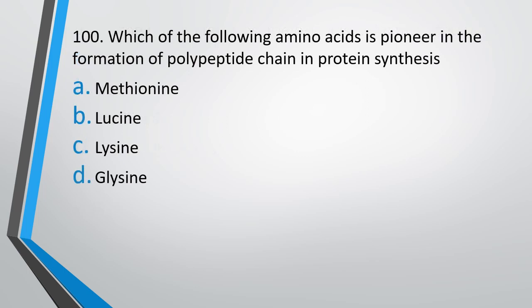Question number 100: Which of the following amino acids is the pioneer in the formation of a polypeptide chain in protein synthesis? — Methionine, leucine, lysine, or glycine. The correct answer is option A — methionine.